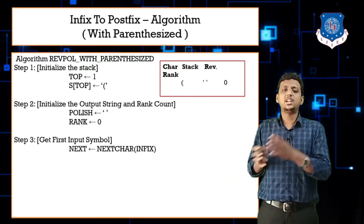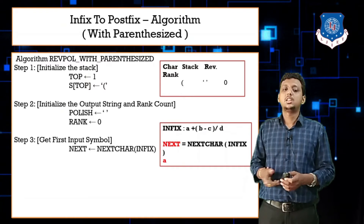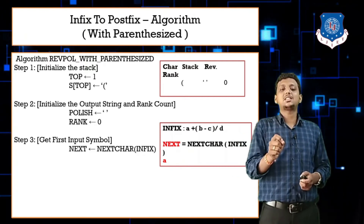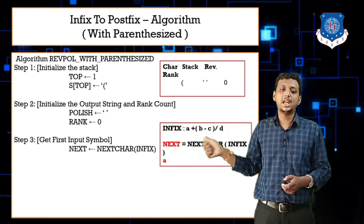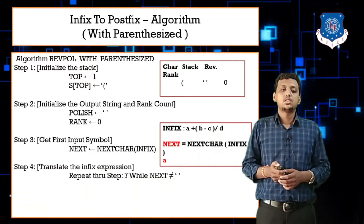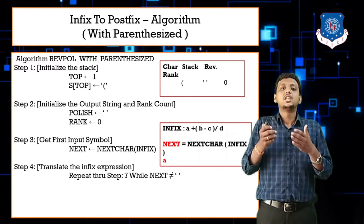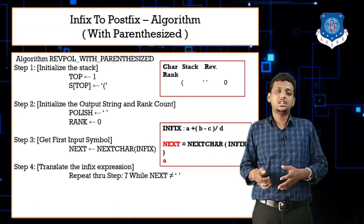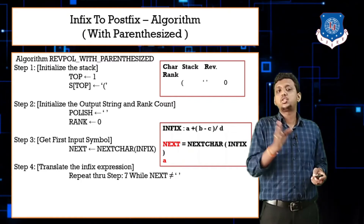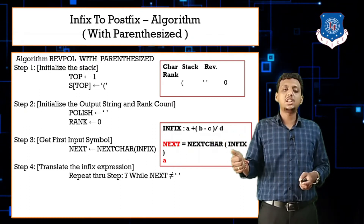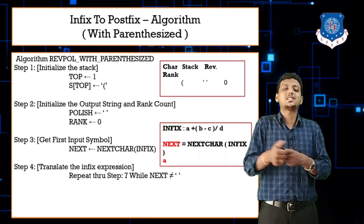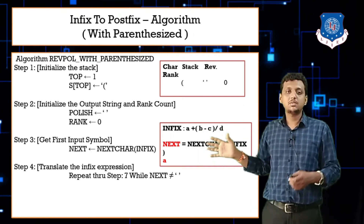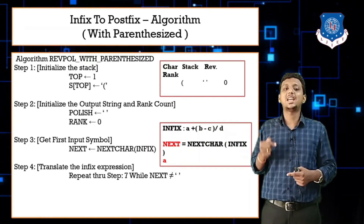Next, take the next input character: next = next character of infix. For example, our infix string is A + (B - C) / D. We get 'A' as the first character. We translate the infix expression into postfix, repeating these steps until next is not equal to null. Unlike the previous algorithm where we appended a hash, here the closing bracket and opening bracket cancel each other out — which we will see in step seven.